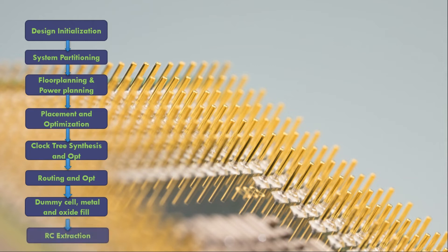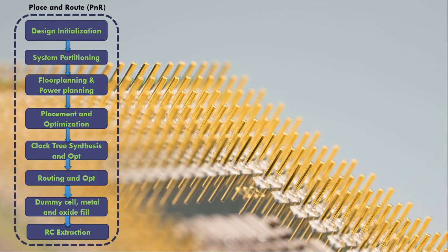And the next step is basically the RC extraction. So with the routing that has been completely done, we will carry out the resistance and capacitance extraction. The resistance and capacitance values from the routed metals will be extracted. And this entire flow from the design initialization to RC extraction is actually called the place and route stage. Even though it says place and route, but this entire flow will be included in PNR stage.